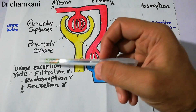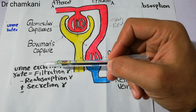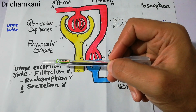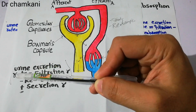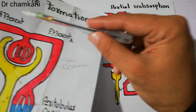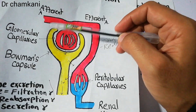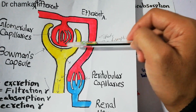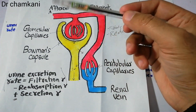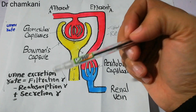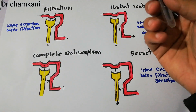We previously discussed the equation for determining urine excretion rate: urine excretion rate equals filtration rate minus reabsorption rate plus secretion rate. The blood contains a lot of substances which are filtered except proteins. Depending upon filtration, reabsorption, and secretion, each component has its own urine excretion rate.